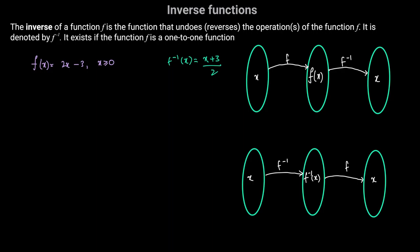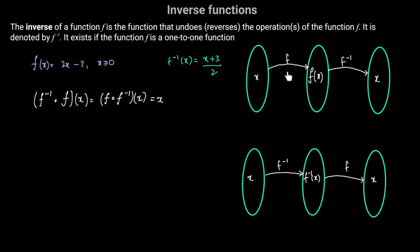Consequently, we get the following relationship: the composite function f inverse of f of x equals f of f inverse of x, and both equal x. For f inverse of f: we first apply f to input x, then apply f inverse, and return x. Similarly, applying f inverse first gives f inverse of x, and then applying f reverses that operation and returns the original input x.